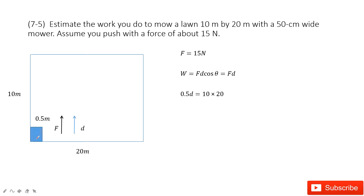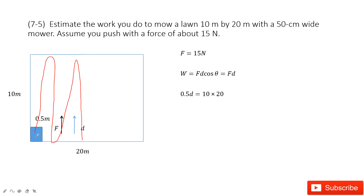We make the mover cover every corner of the square — everywhere. So it may move this way, this way, this way, this way. No matter how it moves, the distance it travels relates to the square. The area of this large square is 10 meters times 20 meters.